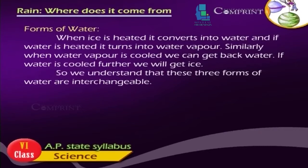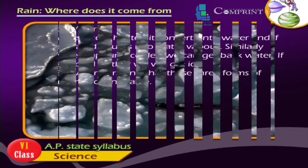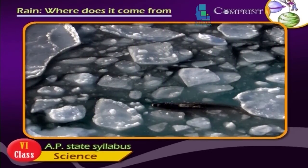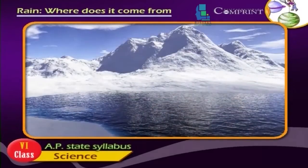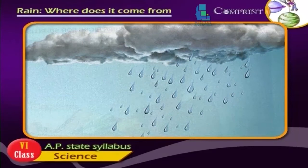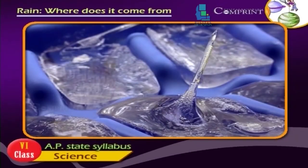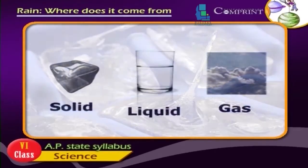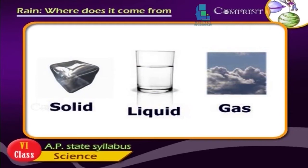When ice is heated, it converts into water, and if water is heated further, it turns into water vapour. Similarly, when water vapour is cooled, we can get back water, and if cooled further, we get ice. So these three forms of water are interchangeable.